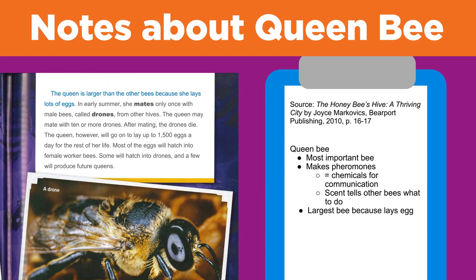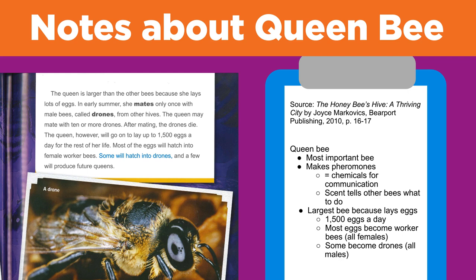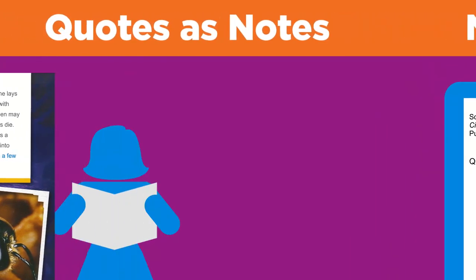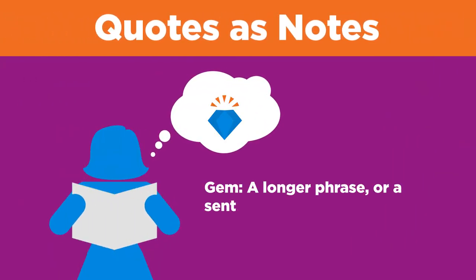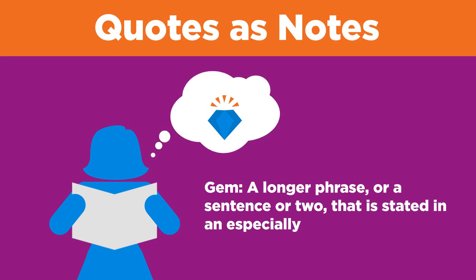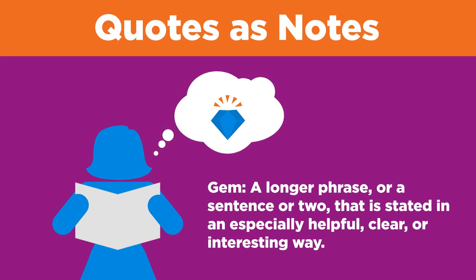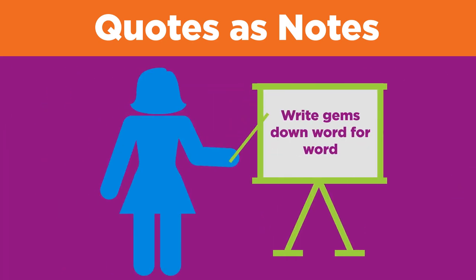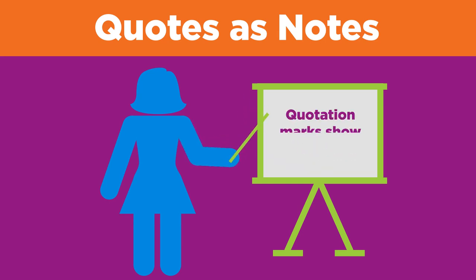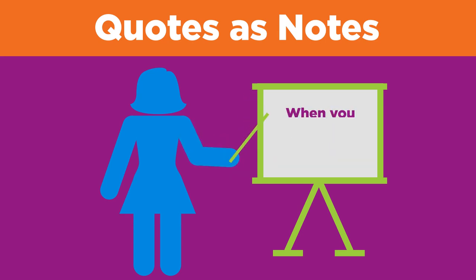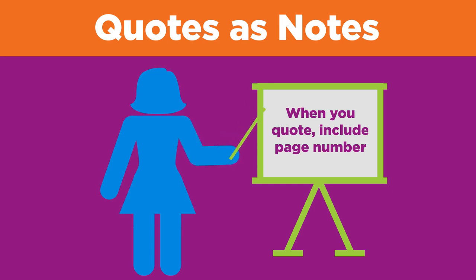Example notes: largest bee because lays eggs; 1,500 eggs a day; most eggs become worker bees, all females; some become drones, all males; a few become queen bees. As you continue reading through your sources, you may find a gem — a longer phrase or a sentence or two stated in an especially helpful, clear, or interesting way. It's okay to write it down word for word, even when it is more than five words long, as long as you use quotation marks. The quotation marks show that these are the author's words and not your own. When you use a direct quote, be sure to include the page number in your notes.